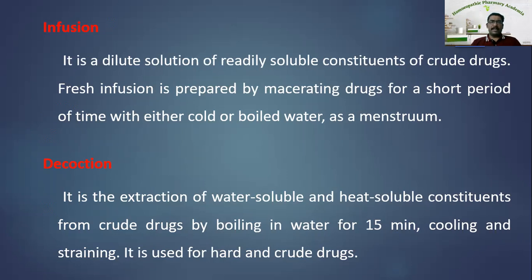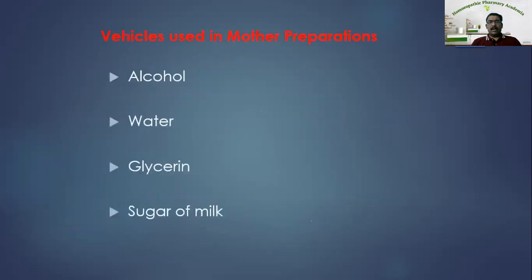The vehicles used in the preparation of drugs in homeopathic pharmacy are alcohol, water, glycerin, and sugar of milk. These are used in the preparation of mother preparations — mother tinctures, mother solutions, and mother substances.